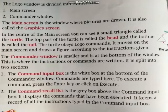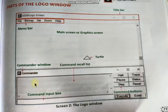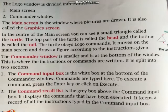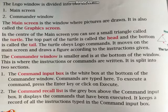The command recall list is a grey box above the command input box. It displays the commands that have been executed and keeps a record of all the instructions typed in the command input box — so all previously fired commands appear in the command recall list.